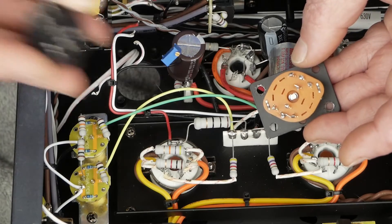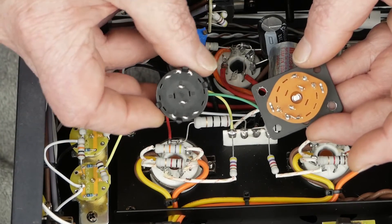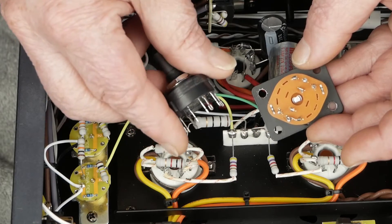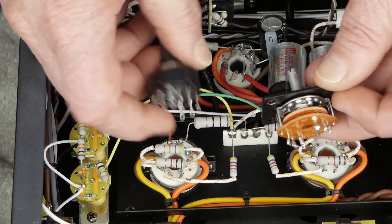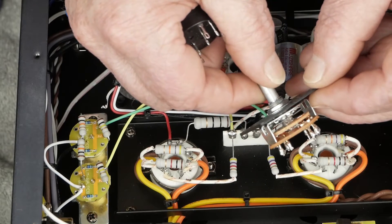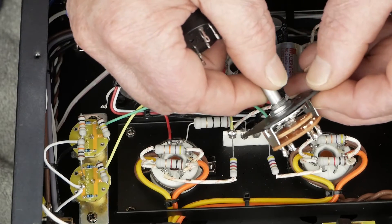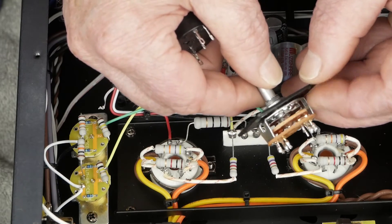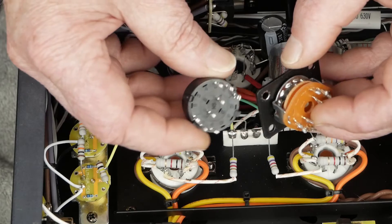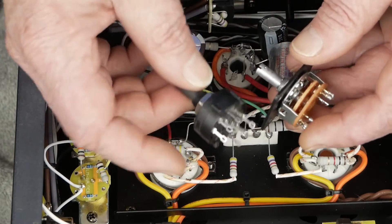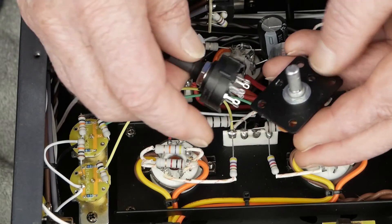We're going to be replacing it with this guy, which is much higher quality. It's got silver contacts, it's sealed. You can see how this is just an open one, and you can see the contacts inside it. These are prone to oxidizing, and that's why he was unable to set the bias.